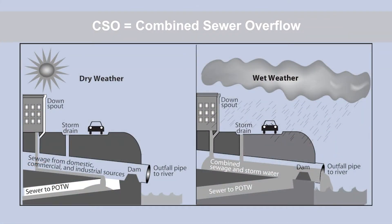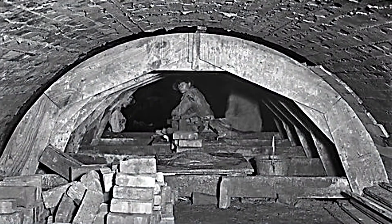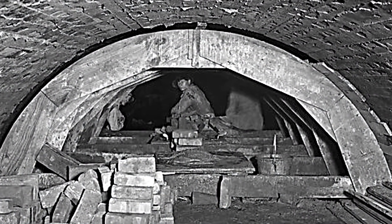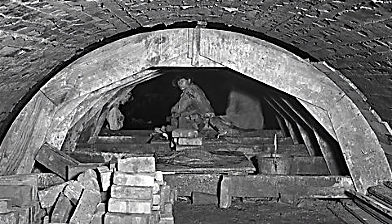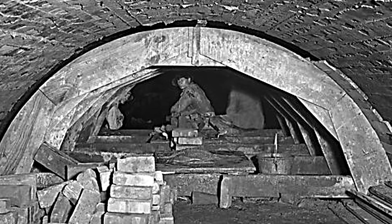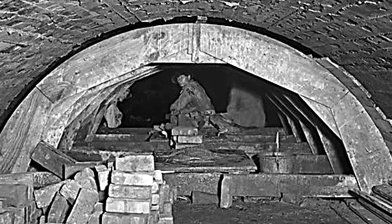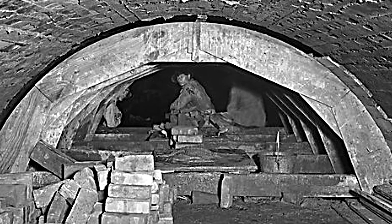Combined sewer systems are stormwater and wastewater conveyances that carry domestic sewage, stormwater runoff, and sometimes even industrial waste in one pipe. Most combined sewer systems in the United States were installed in the mid to late 1800s as a result of a considerable population shift from rural to urban areas.